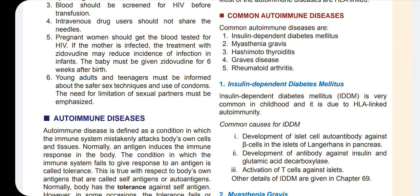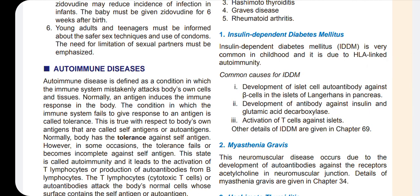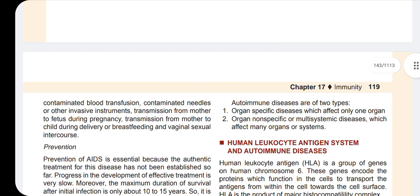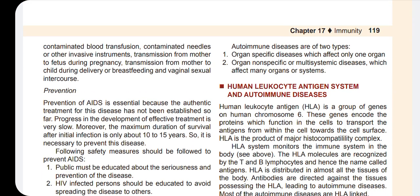Next are autoimmune diseases. Cytotoxic T cells keep on attacking our own body cells. When self-antigens are attacked due to loss of tolerance, it is called an autoimmune disease. There are two types: organ-specific, which affects only one organ, and non-specific, which attacks multiple organs.